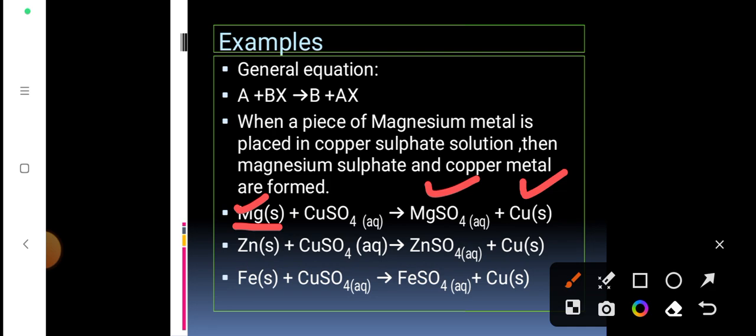Similarly, zinc reacting with copper sulfate gives rise to zinc sulfate and copper. Zinc is more reactive than copper, so zinc can displace copper from copper sulfate. Another example is iron reacting with copper sulfate. All three metals — magnesium, zinc, and iron — are more reactive than copper, hence all three can displace copper from copper sulfate.